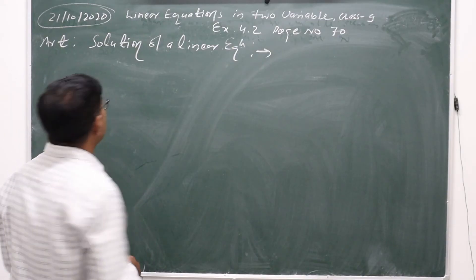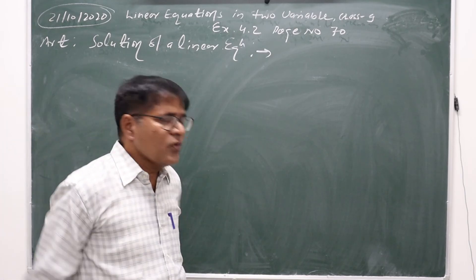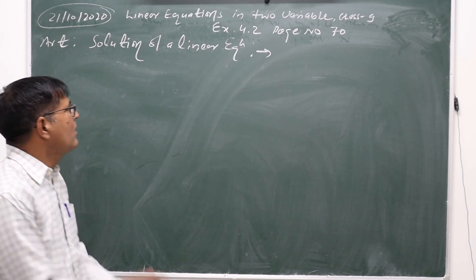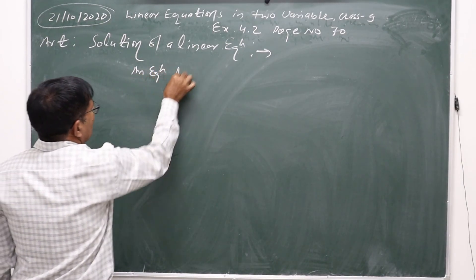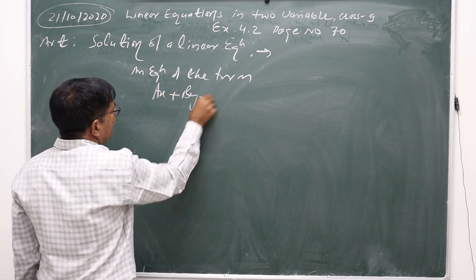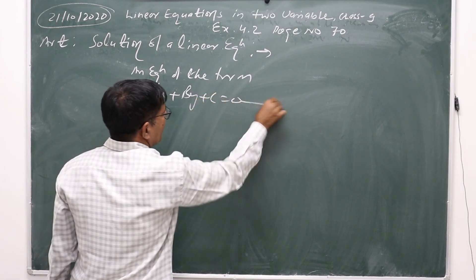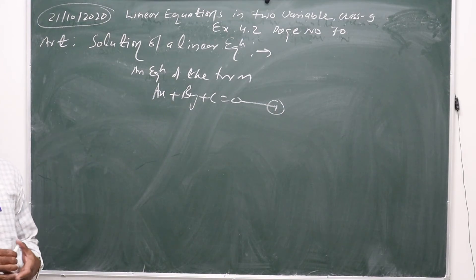Hello students. This is Class 9, Linear Equations in Two Variables, and today we will learn about the solution of a linear equation. First of all, what is a linear equation? An equation of the form ax plus by plus c equals 0 is a linear equation in variables x and y, also called a linear equation in two variables.